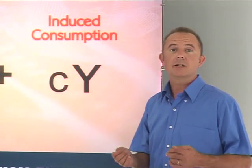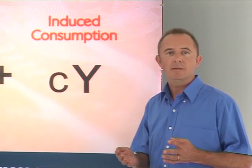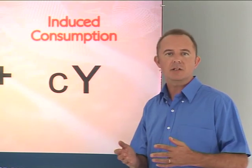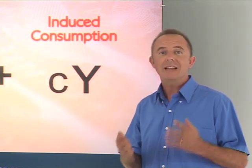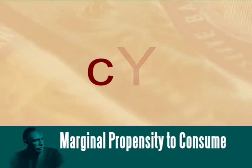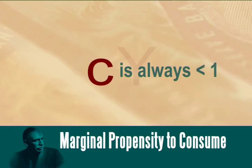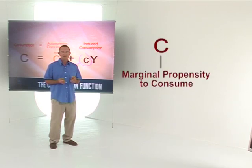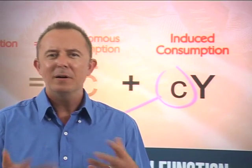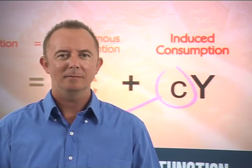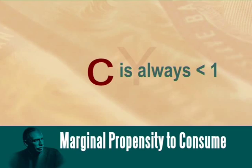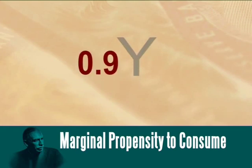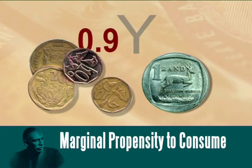Induced consumption is that part of consumption that does depend on income. An increase in income, Y, causes an increase in consumption spending, C, but the increase in consumption spending is less than the rise in income. This pattern — to increase consumption spending by less than any rise in income — is shown by the letter small c, and we call this our marginal propensity to consume. It plays a key role in the Keynesian model. The value of this marginal propensity is always less than one. If the marginal propensity to consume is 0.9, it indicates that for every one rand increase in income, households will increase their spending by 90 cents.